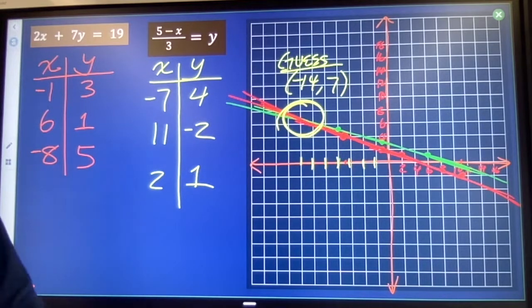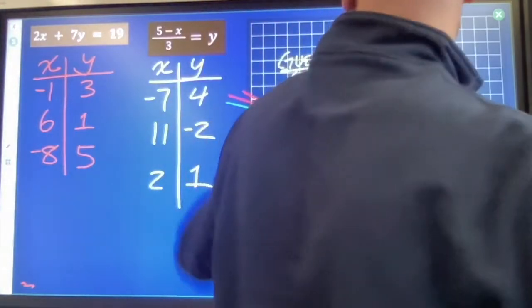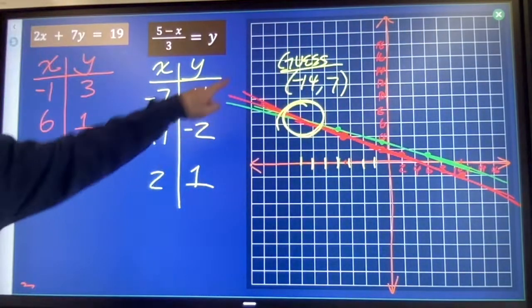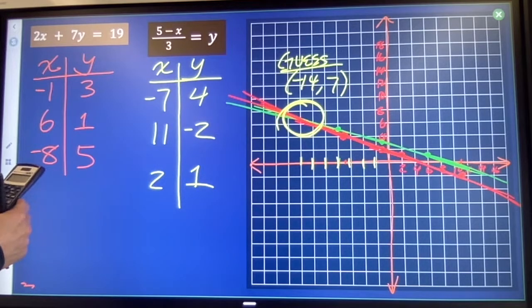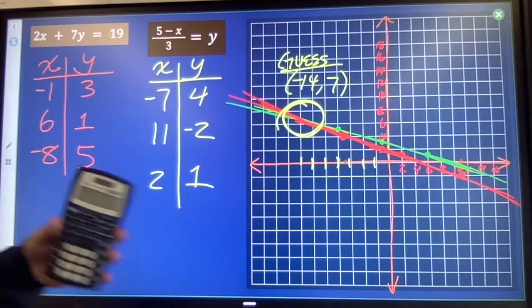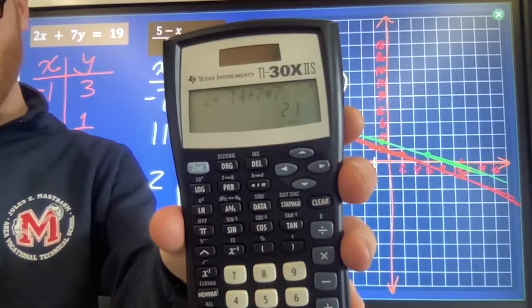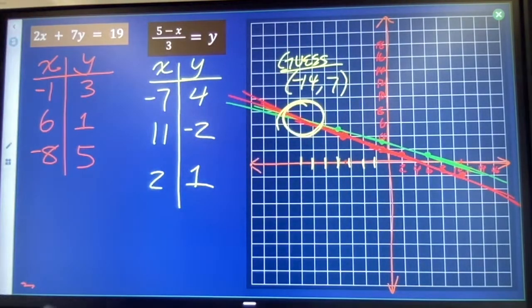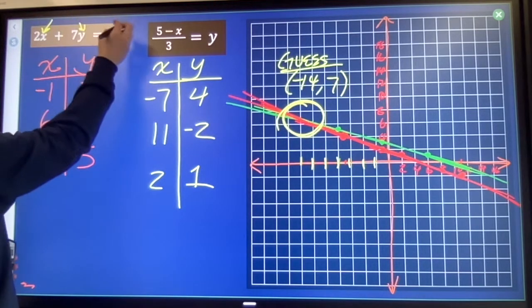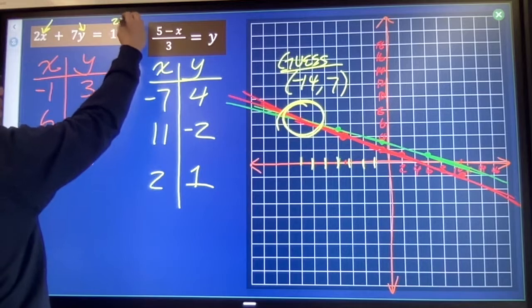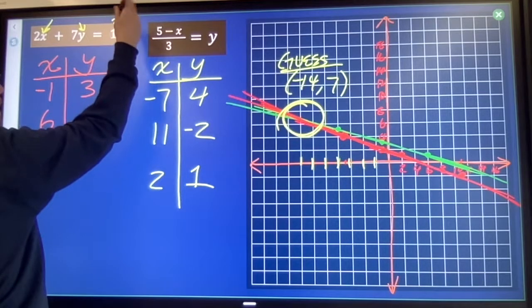The way that I'll check that is when x is negative 14, 2 times negative 14 plus 7 times 7. I get 21, right? When I put negative 14 in here and I put 7 in there, I get 21. So we're close to 19.